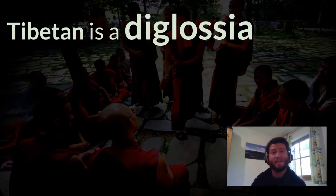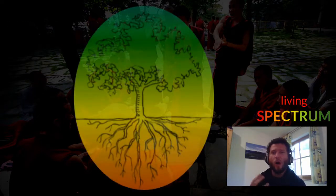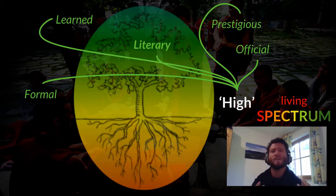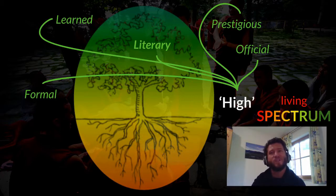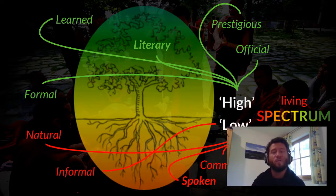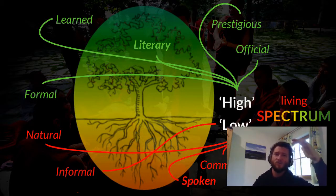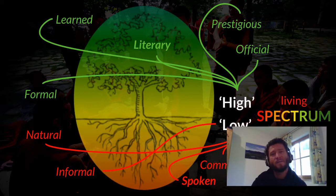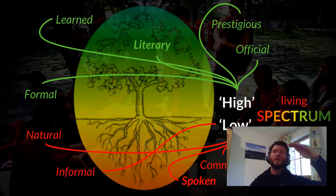Tibetan is a diglossia. All languages have a spectrum between high language and low language. When we're talking about the high, we're talking about formal, learned, literary language — prestigious and official. It's a form of the language that usually requires education to learn. When we're talking about the low, we're talking about natural, informal, spoken, common, everyday language. In Tibetan, we also have this spectrum, and the range from lowest low to highest high is just a bit broader than it is in English.